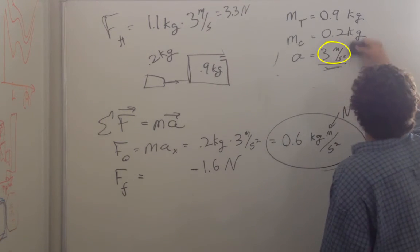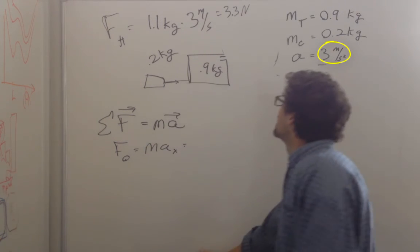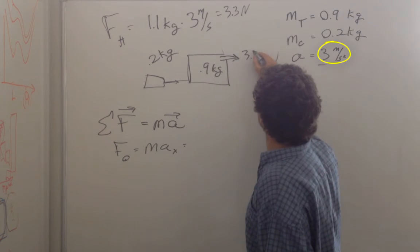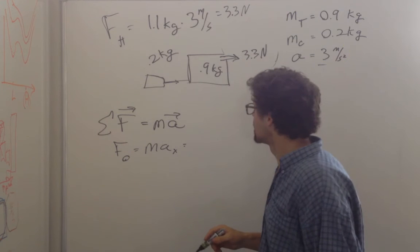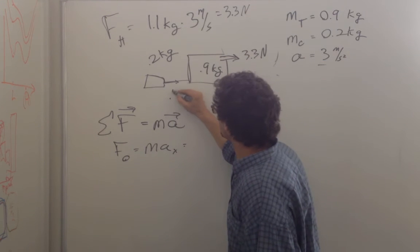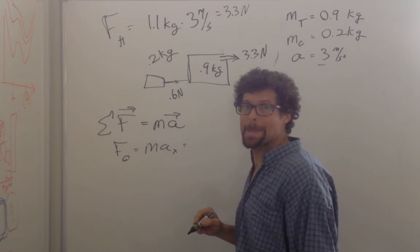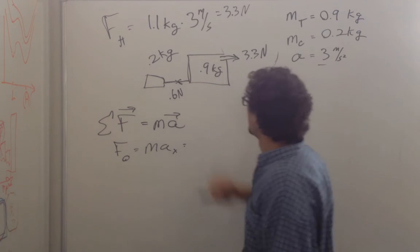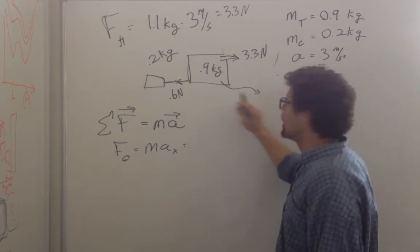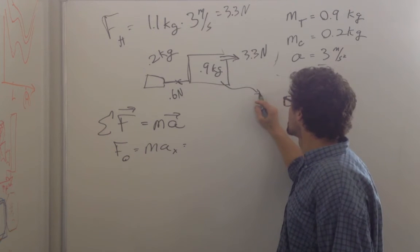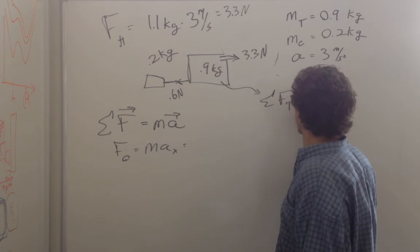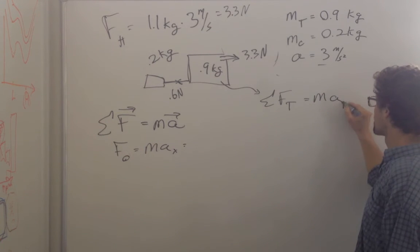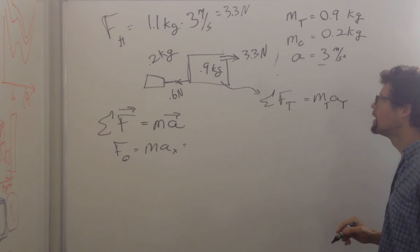Now if we look at this scenario only and we want to find the force of the hand, and we say it's 3.3 Newtons, does that make sense? Because this is 0.6 Newtons, remember? And that means this is being pulled backwards at 0.6 Newtons. So if we look at the truck, the vector sum of the forces on the truck equal mass times acceleration of the truck, the mass of the truck.